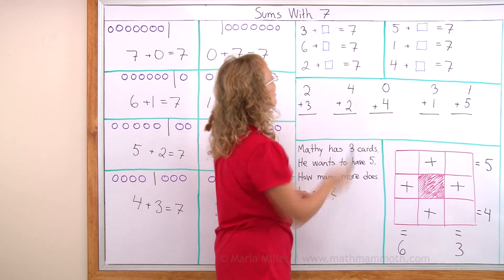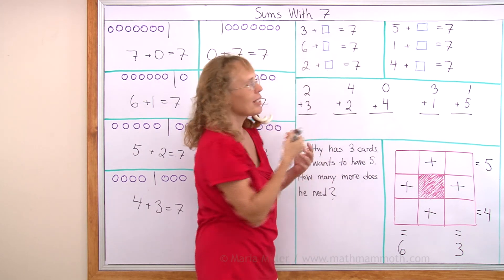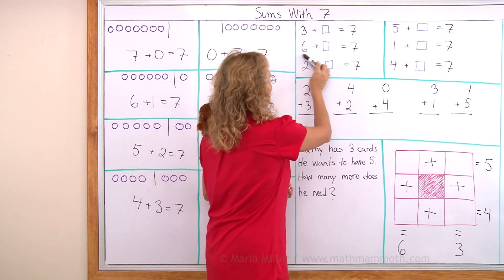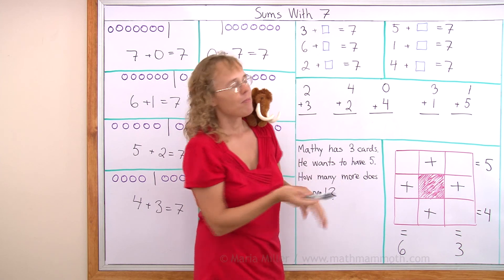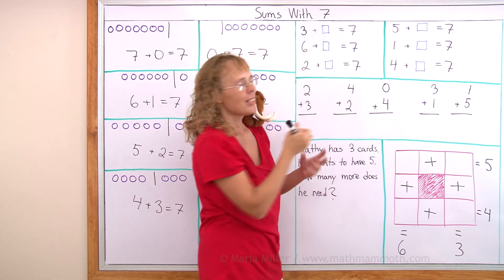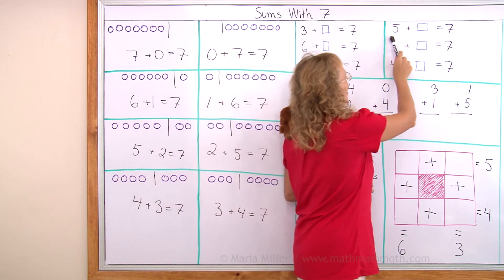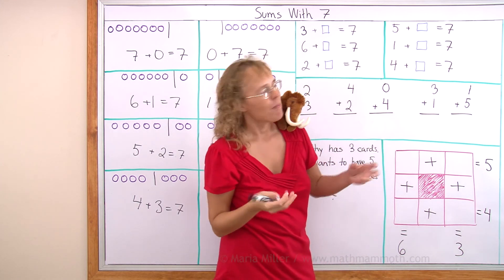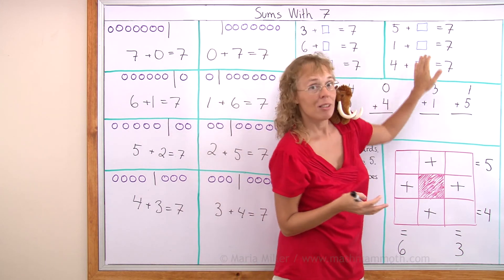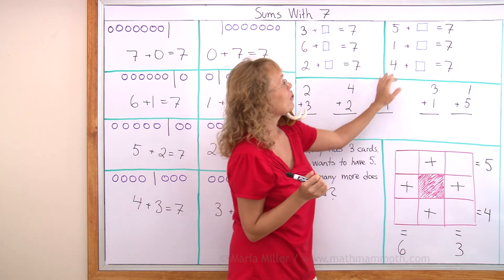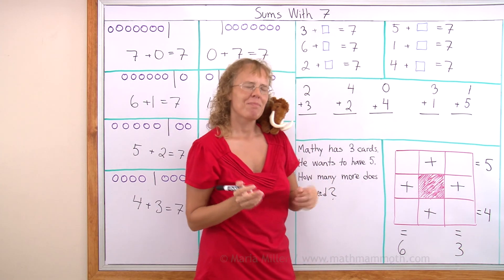Let's try one more time. Three plus how many makes seven? Six plus how many makes seven? Two and how many makes seven? Five and how many more makes seven? One and what number makes seven? Four and what number makes seven? Good job.